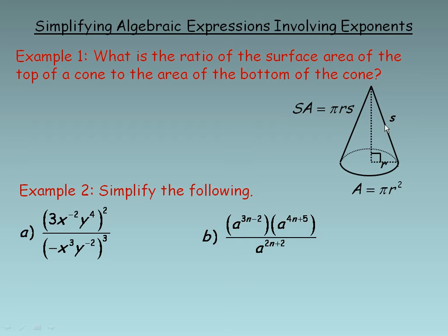In the first example we are asked to find the ratio of the surface area of the top of a cone — this part right here — to the area of the bottom. The formula for the area of the top of the cone is pi r s. This is also called the lateral surface area. If you think of this as an ice cream cone, it is the part that you hold. That is pi r s.